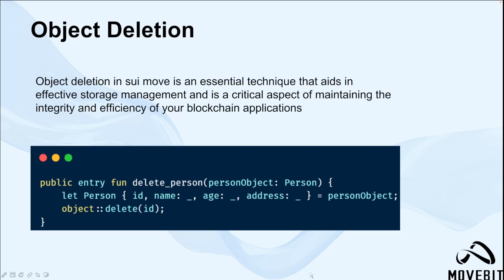In Sui Move, object deletion takes on heightened importance. As a language built for blockchain and smart contract development, Sui Move functions within an environment where judicious storage usage is vital. Smart contracts often need to preserve their state over extended duration, and inefficient storage utilization can result in escalated costs or even execution failures.